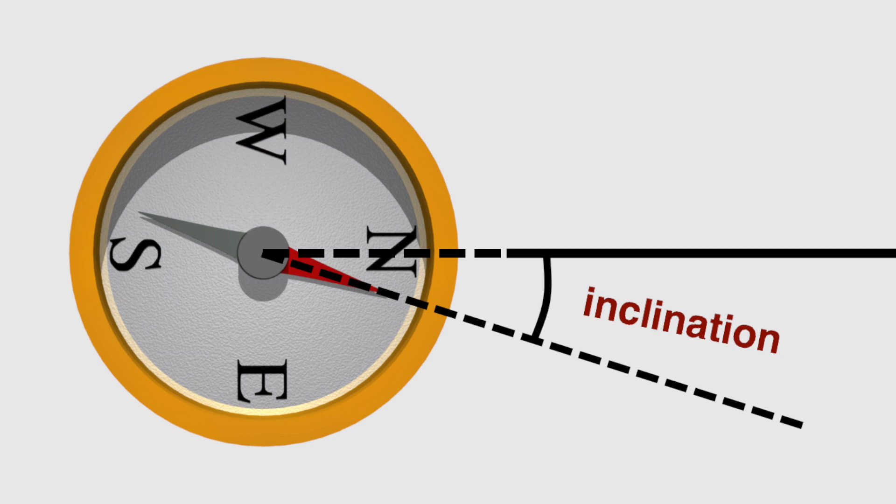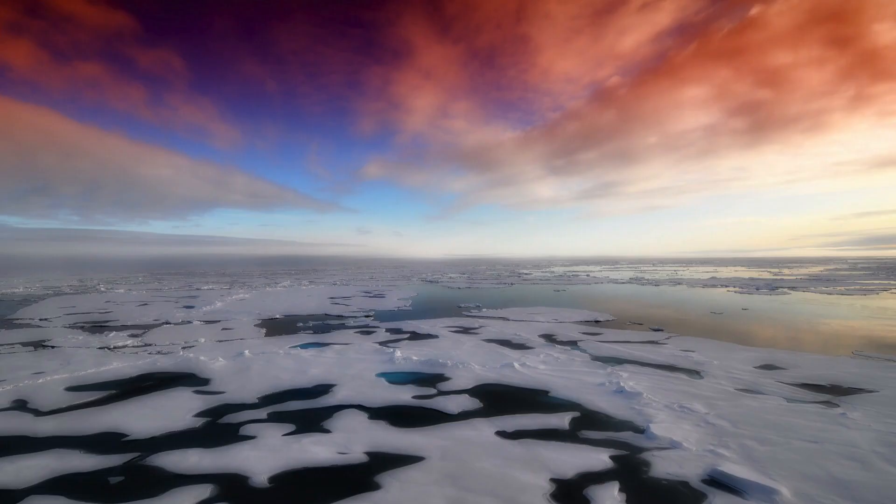Where I'm standing, the inclination is fairly close to zero, which means the Earth's magnetic field is almost parallel to the floor. If I were standing on the North or South Pole, it would be 90 degrees, straight into or out of the ground.